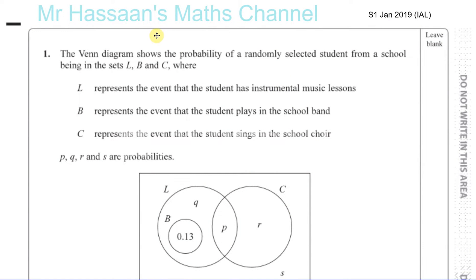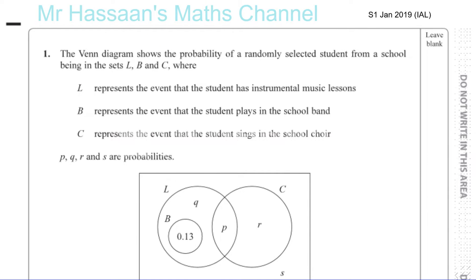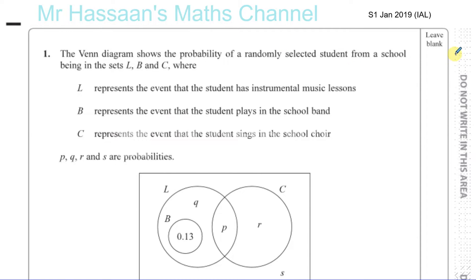Now I'm going to be answering some questions from Statistics 1, January 2019, IAL paper. I'm going to start with question number 1, about Venn diagrams and probability.